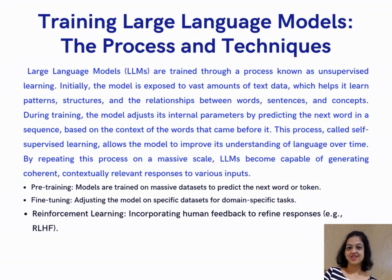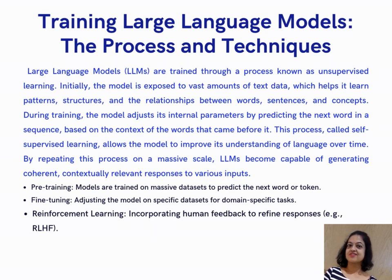The process and techniques of training Large Language Models: LLMs are trained through unsupervised learning. Initially, the model is exposed to vast amounts of text data, helping it learn patterns, structures, and relationships between words, sentences, and concepts. During training, the model adjusts its internal parameters by predicting the next word in a sequence based on preceding context. This self-supervised learning process allows the model to improve its understanding of language over time, becoming capable of generating coherent, contextually relevant responses.